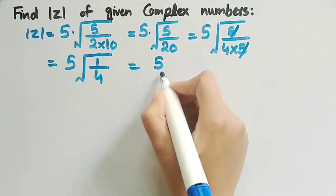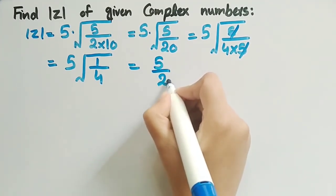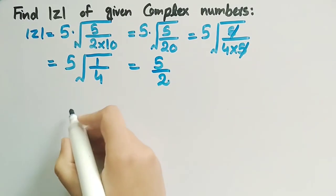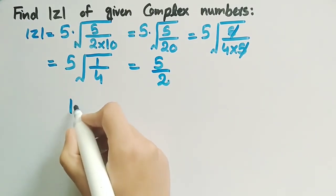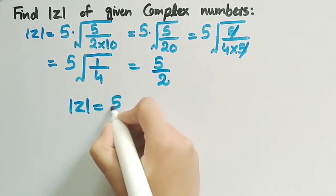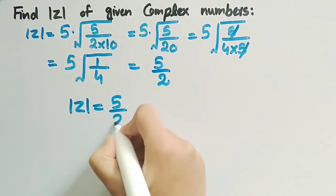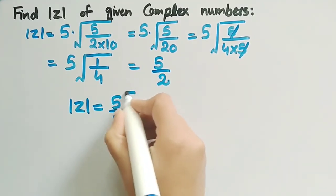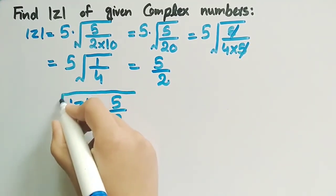So the value of modulus of z is equal to 5 by 2 for the given complex number in example number 2.